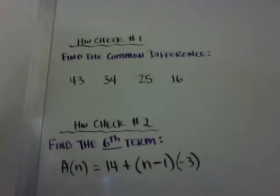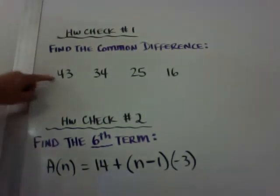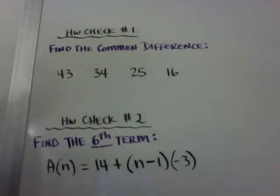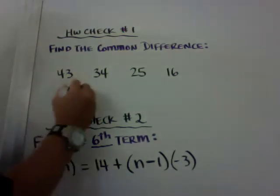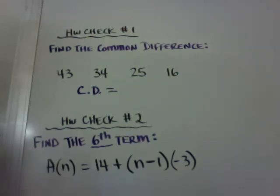Here's your two homework check problems. Should be simple for you. Homework check number one, find the common difference of these numbers. Please write these numbers down as your original problem, and then tell me what the common difference is. If you would like to abbreviate and say common difference equals, you may. So common difference equals whatever it comes out to be.